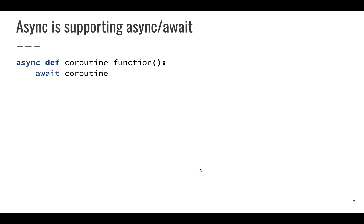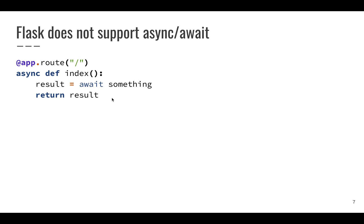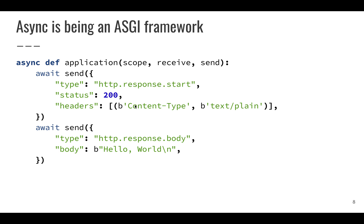That said, I think that's not what people mean when they say 'why isn't Flask async.' Another definition — becoming the more common one — is that async means supporting async/await. This means that if you have a coroutine you can await it, which requires an async def coroutine function. Specifically for Flask, this means you'd want to await something in your view function, and Flask does not support this.